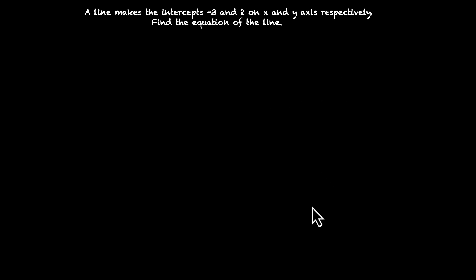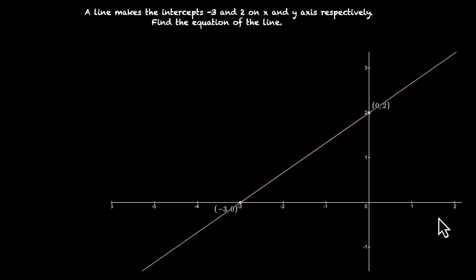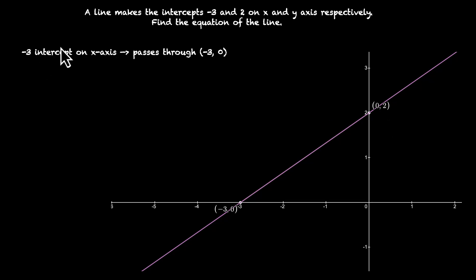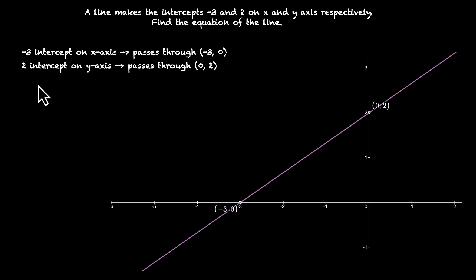Let's plot this line. This is the x axis, this is the y axis. The line makes intercepts minus 3 and 2 on x and y axis. So the x intercept is minus 3 and the y intercept is 2. Minus 3 intercept on x axis means it passes through minus 3 comma 0, and 2 intercept on y axis means it passes through 0 comma 2.